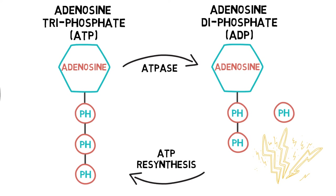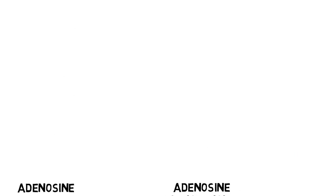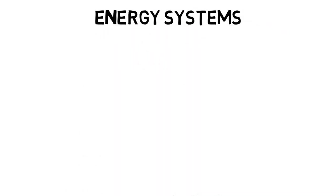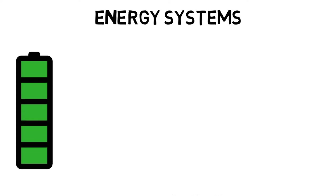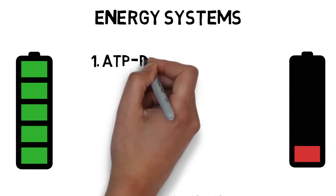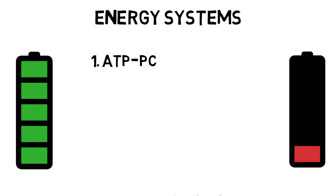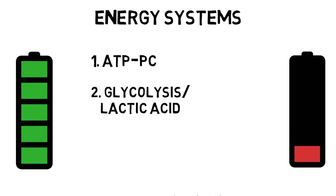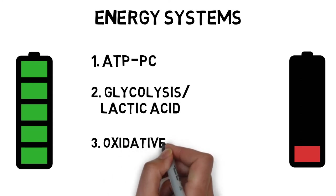Resynthesis of ATP requires energy, meaning that we need to break down fuels that we eat and drink through a series of chemical reactions. The body has three different metabolic pathways, or energy systems, to convert fuels into fresh, new ATP so we don't run out of energy. All three energy systems do not work independently, but instead work together to ensure we have a continual supply of energy. Depending on the intensity and the duration of an activity, a different energy system will be prominent.